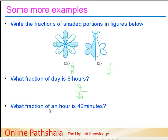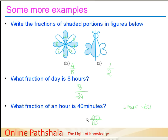And what fraction of an hour is 40 minutes? One hour is divided into 60 equal minutes. So 60 is going to be our denominator. And how many minutes are we considering? 40. So we write 40 as the numerator. Therefore, 40 minutes is 40 by 60 of an hour.